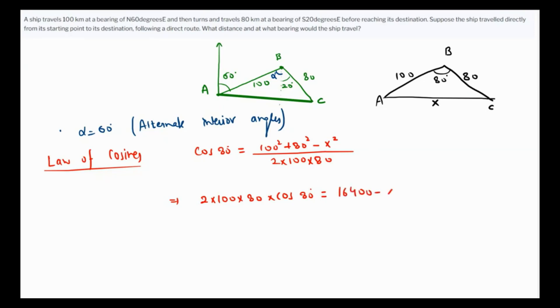100 squared plus 80 squared is 16,400 minus x squared. If we rearrange, x squared equals 16,400 minus 2 times this expression. That's 200 times 80 which is 16,000 times cos 80 degrees. We take square root both sides to get x. Up to two decimal places, that's 16,400 minus this value, and the square root comes out as 116.71 kilometers.